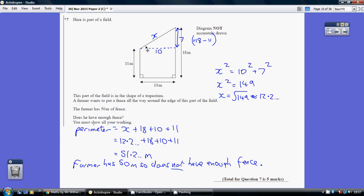So how do you work out the hypotenuse of this right angle triangle? Well, Pythagoras tells us that x squared equals 10 squared plus 7 squared. 10 squared plus 7 squared is 149. So x squared is 149. x is the square root of 149, which is about 12.2.